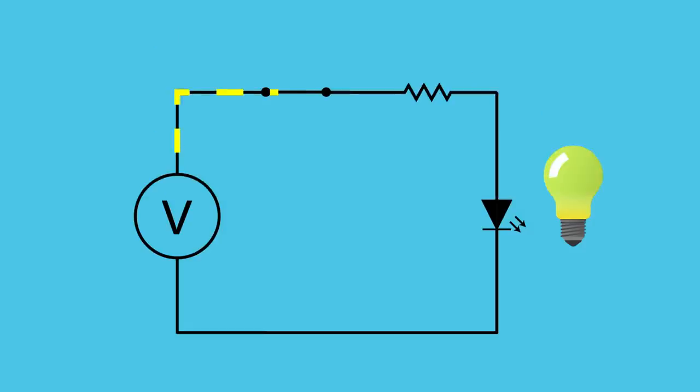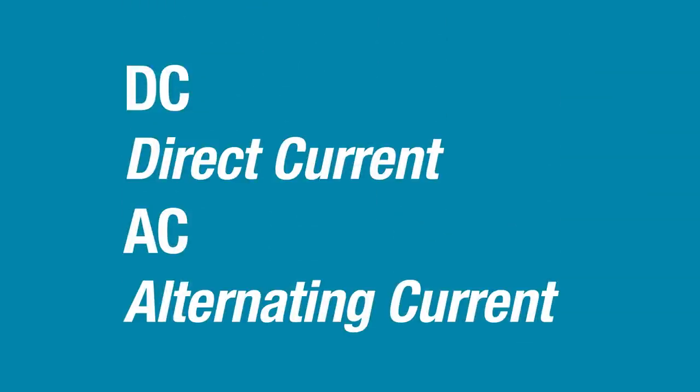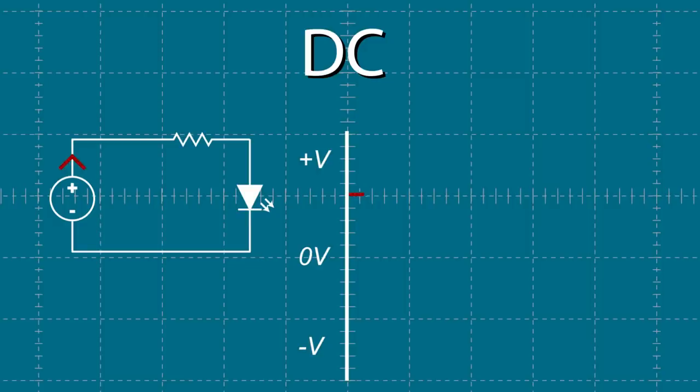When any circuit is connected to a voltage source electric current flows powering the circuit. The two types of electric current are DC direct current and AC alternating current. In DC circuits the electric current flows in one direction. These power sources often maintain a constant voltage. In the case of batteries the voltage only changes slightly as the power source is slowly drained.